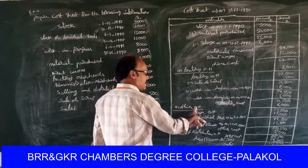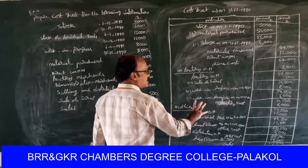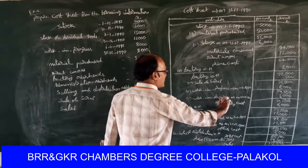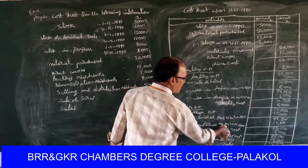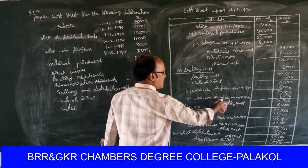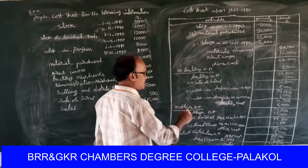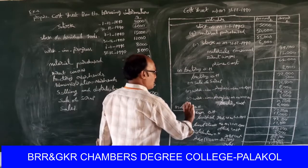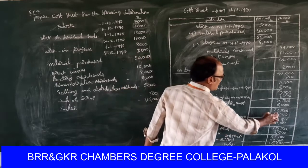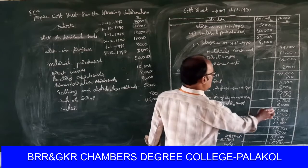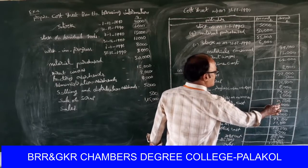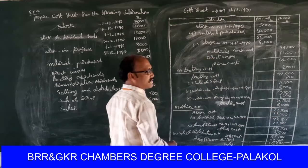All office overheads are added to the factory cost to find office cost. Administrative overheads — how much? Six thousand rupees. Seventy-one thousand five hundred plus six thousand equals seventy-seven thousand five hundred.